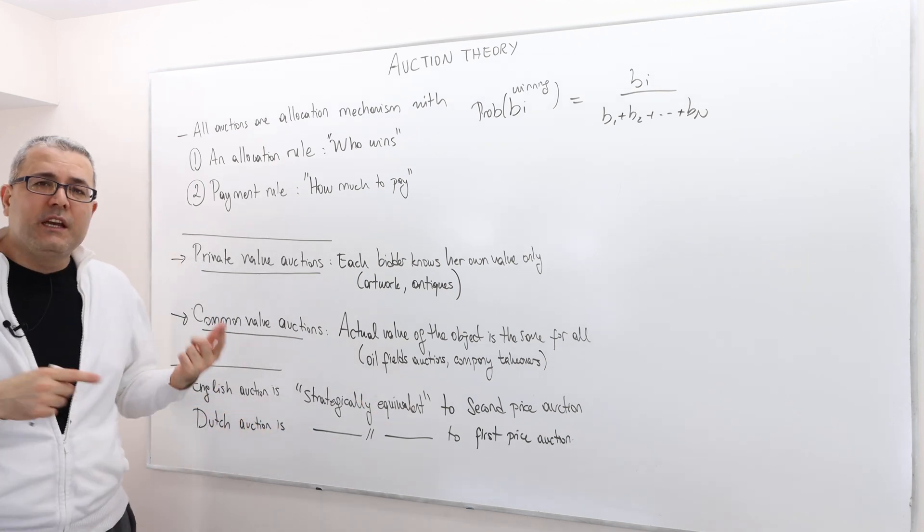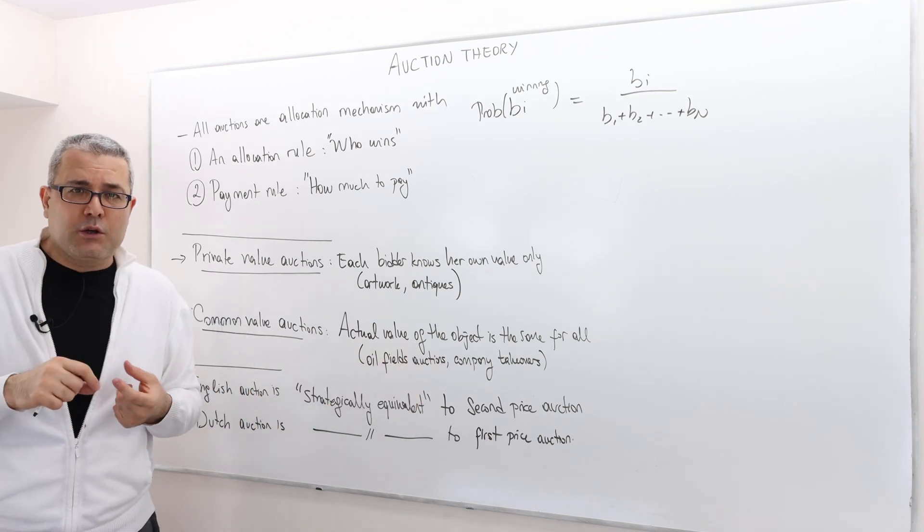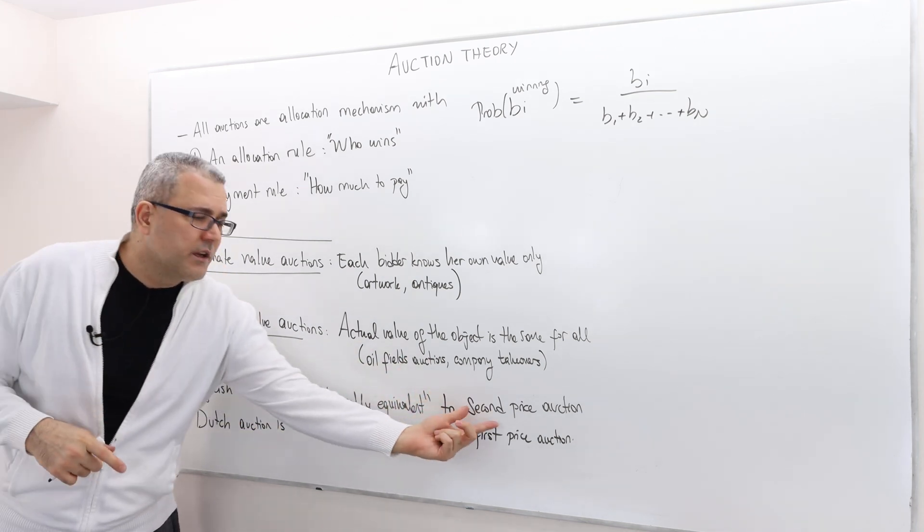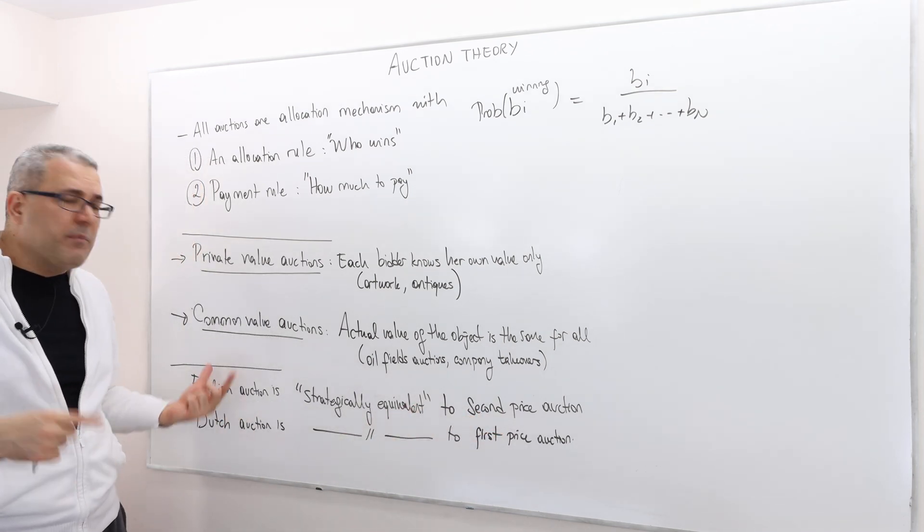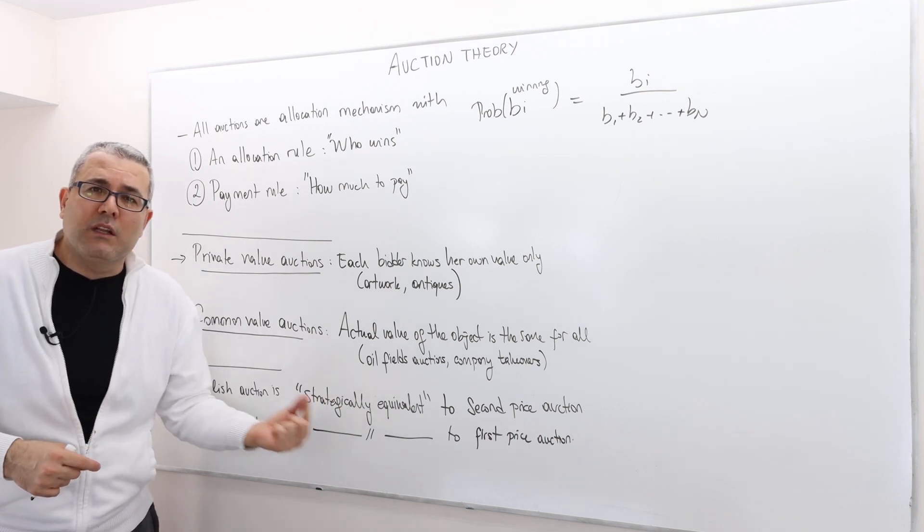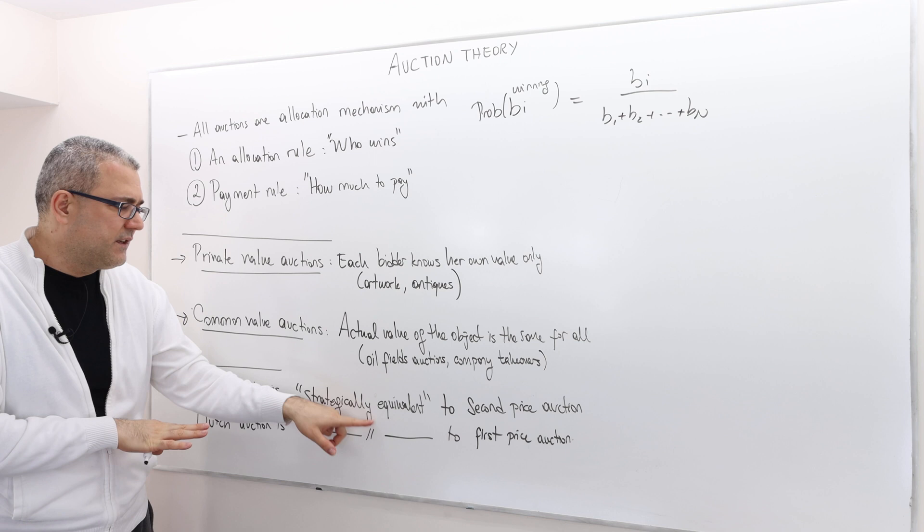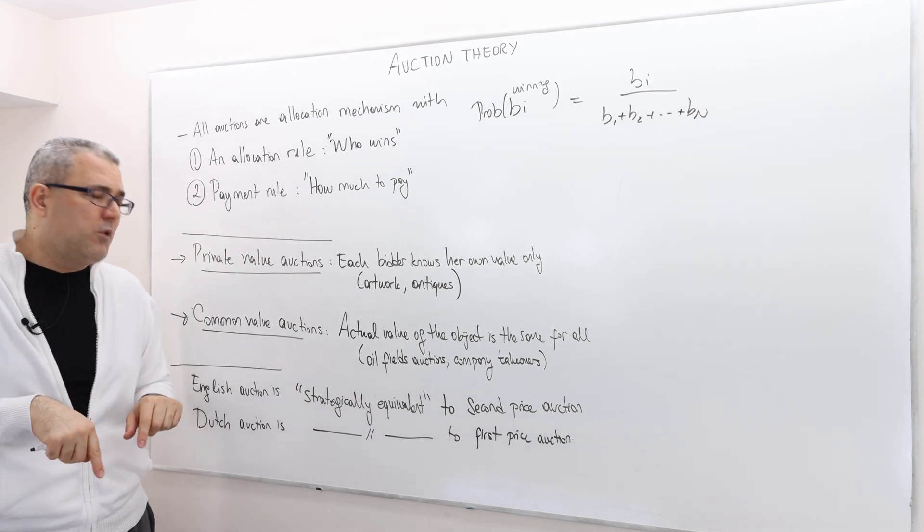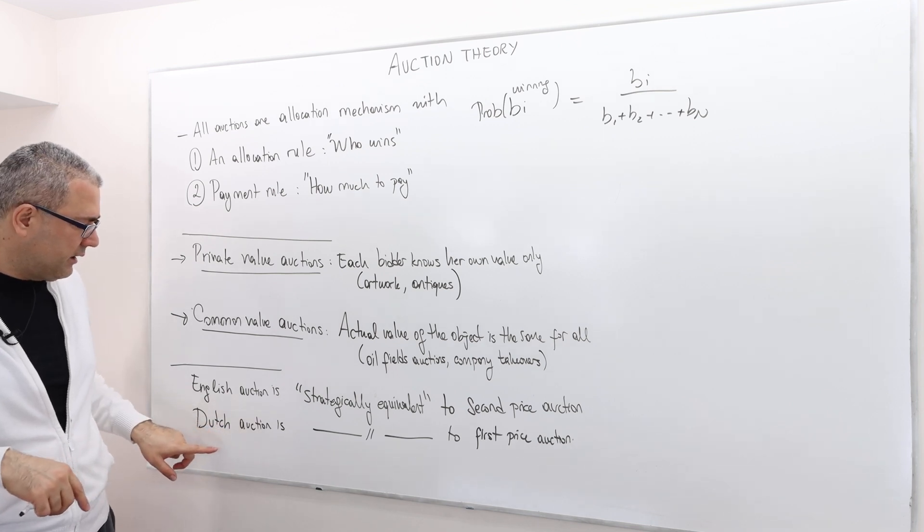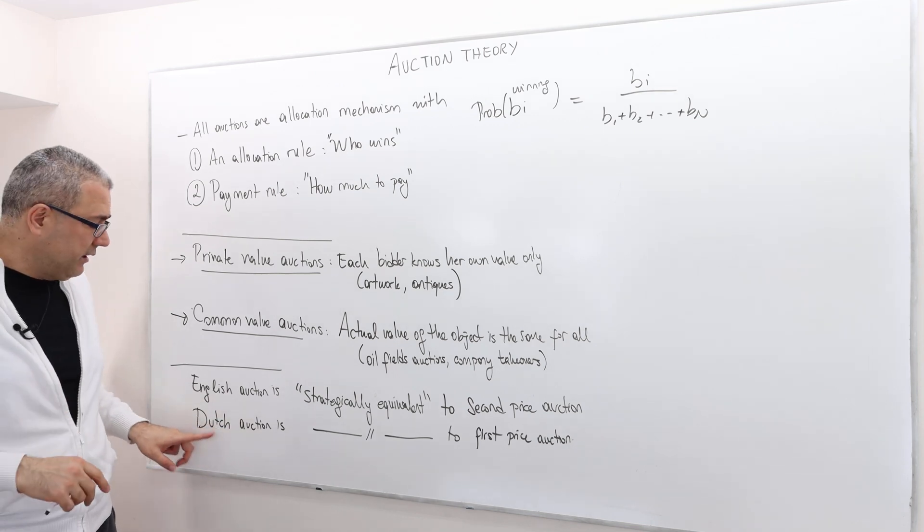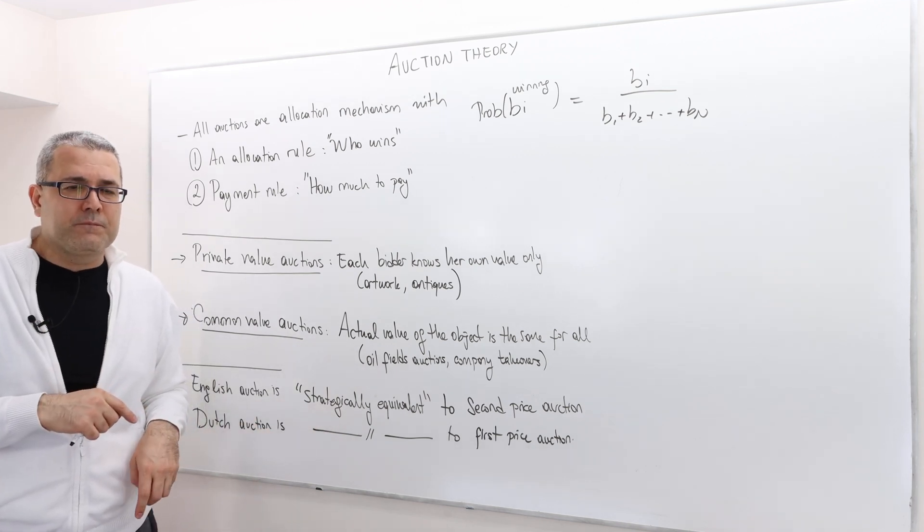So, the English auction is actually open bid auction and the second price auction is sealed bid auction. Here, nobody can see the other's bid. Here, everybody can see the other's bid. But nevertheless, they're strategically equivalent. But quote unquote, I'm going to leave this strategically equivalent vague here at this moment, but later I'm going to talk about it a bit more detail. And similarly, Dutch auction is strategically equivalent to first price auction.